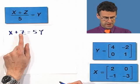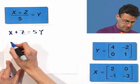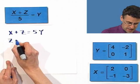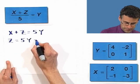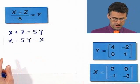And then to solve for z, I want to get z alone. So I'm going to subtract x from both sides. And so I see that z equals 5y minus x.